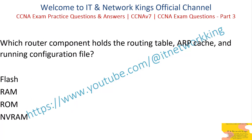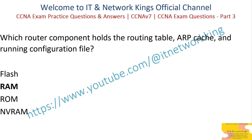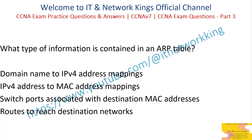Which field in an IPv6 packet is used by the router to determine if a packet has expired and should be dropped? Hop Limit. TTL. Address Unreachable. No Route to Destination. Answer: Hop Limit. Which router component holds the routing table, ARP cache, and running configuration file? Flash. RAM. NVRAM. Answer: RAM.